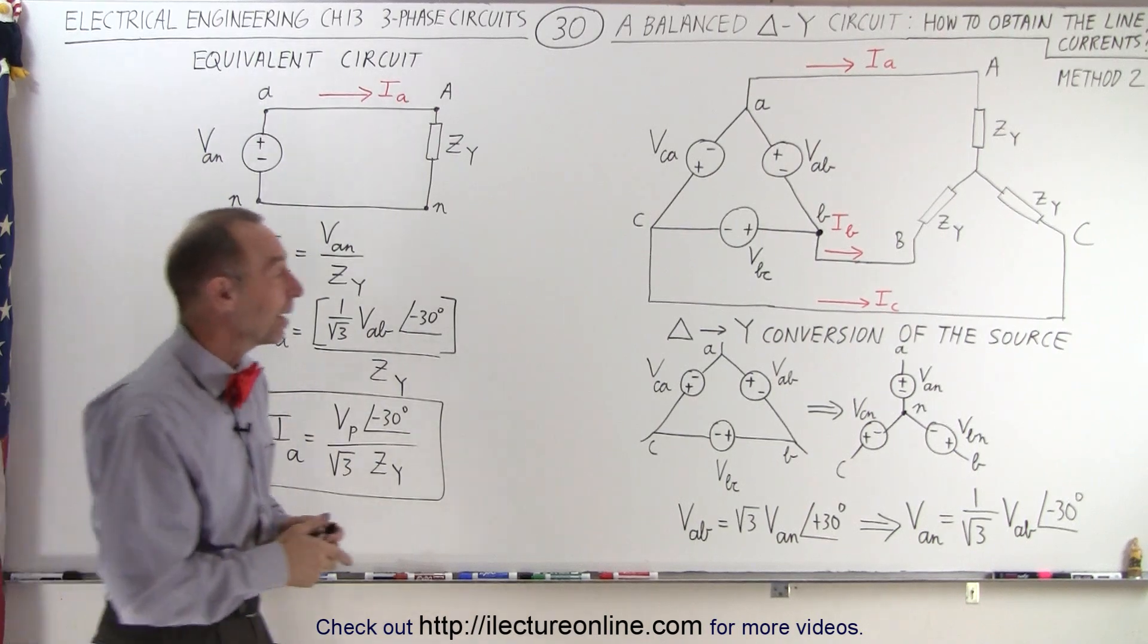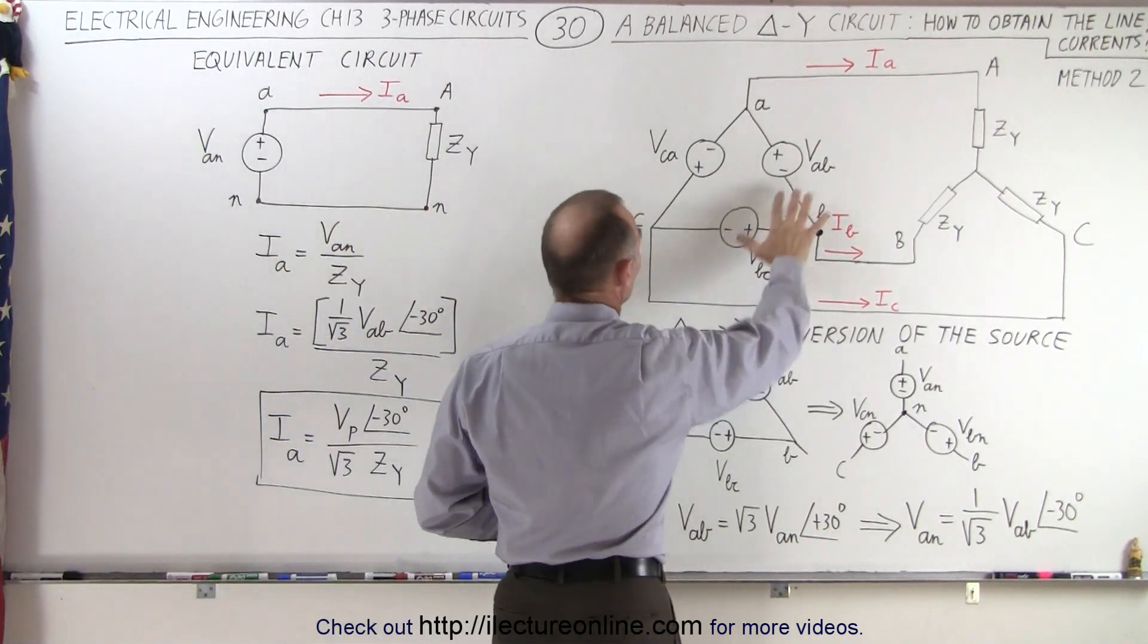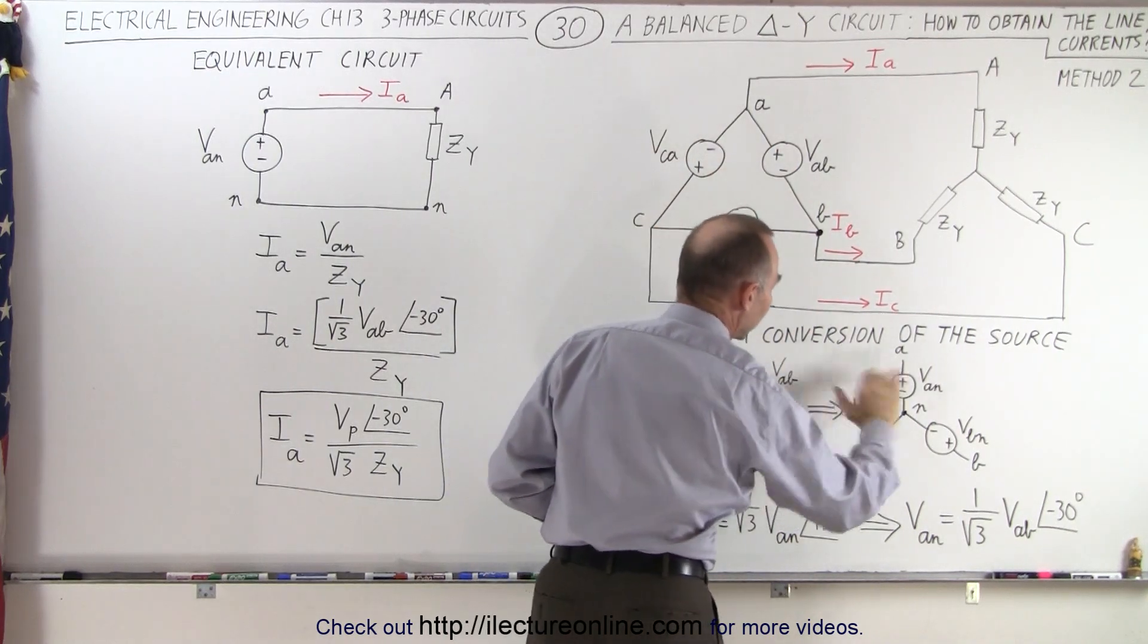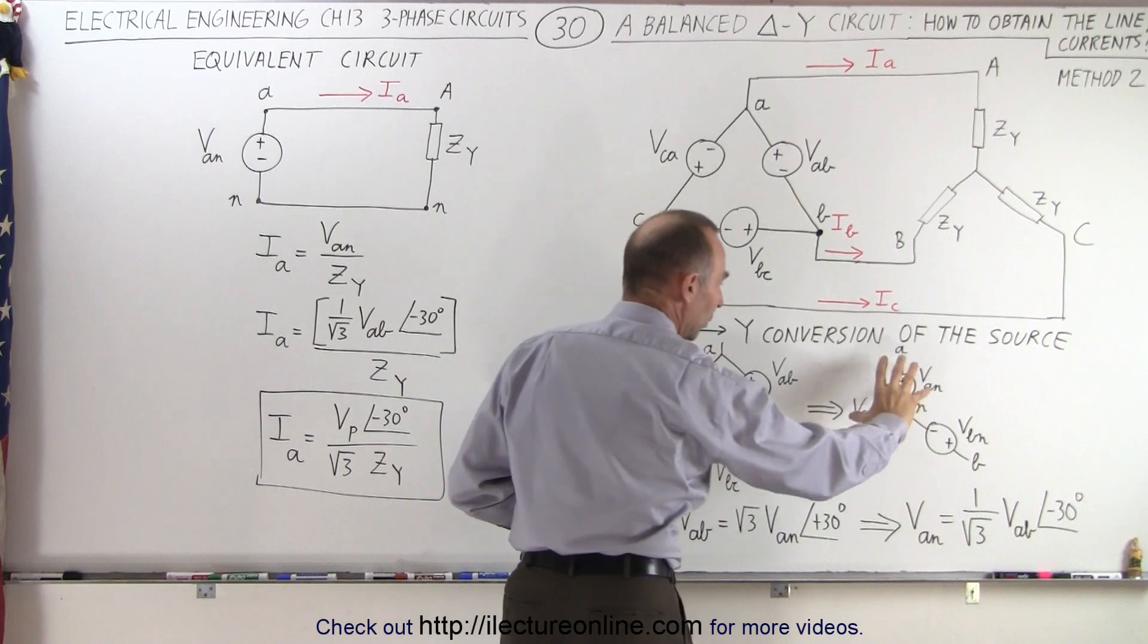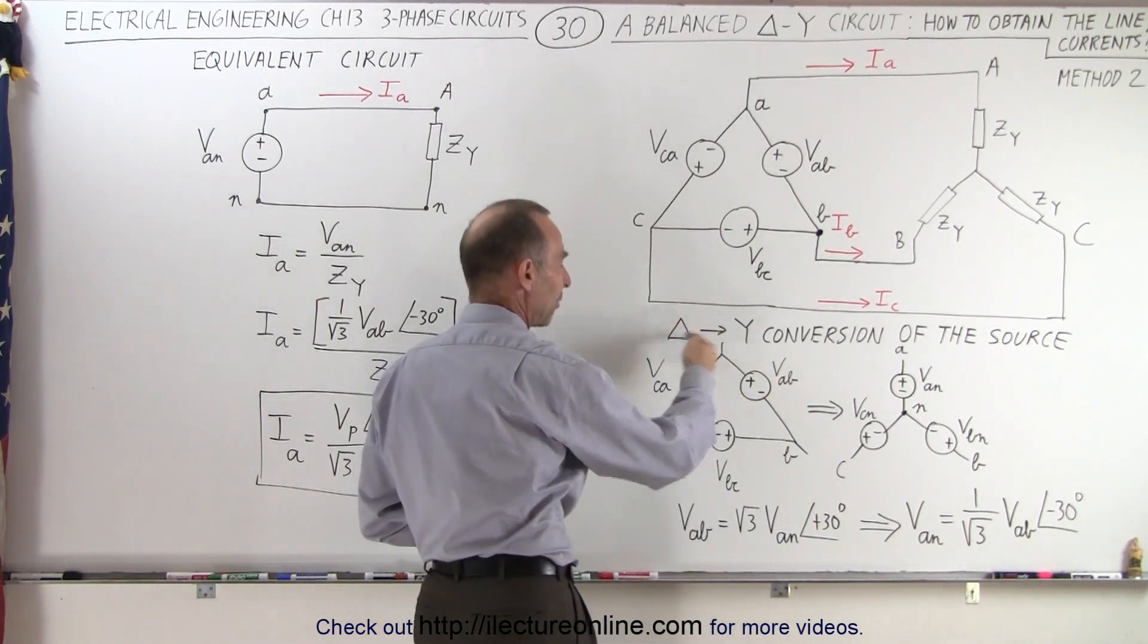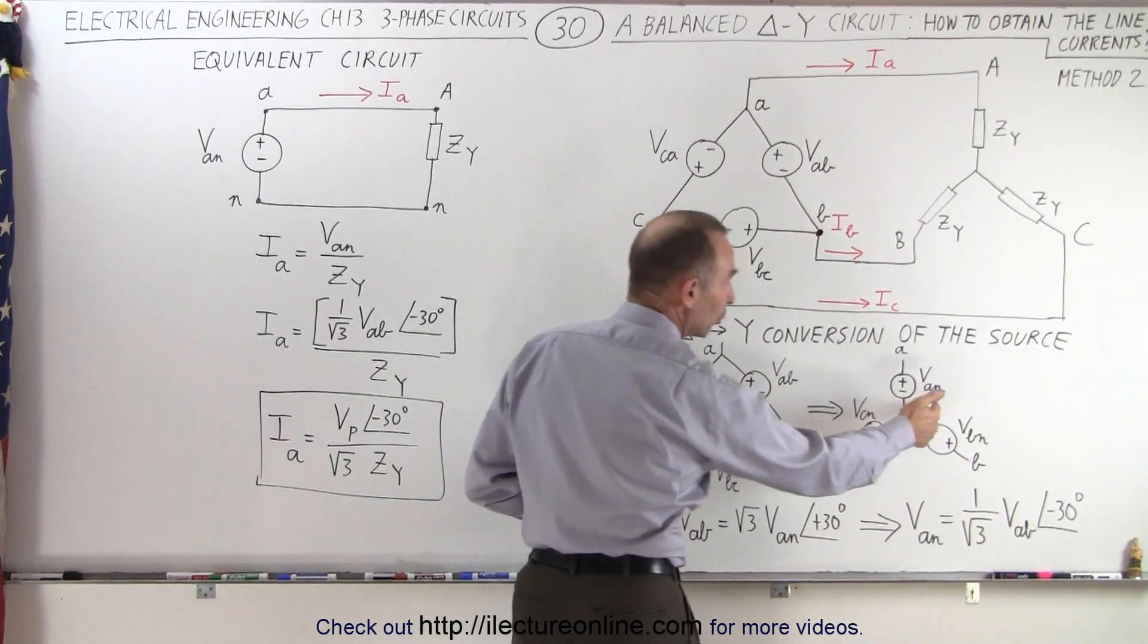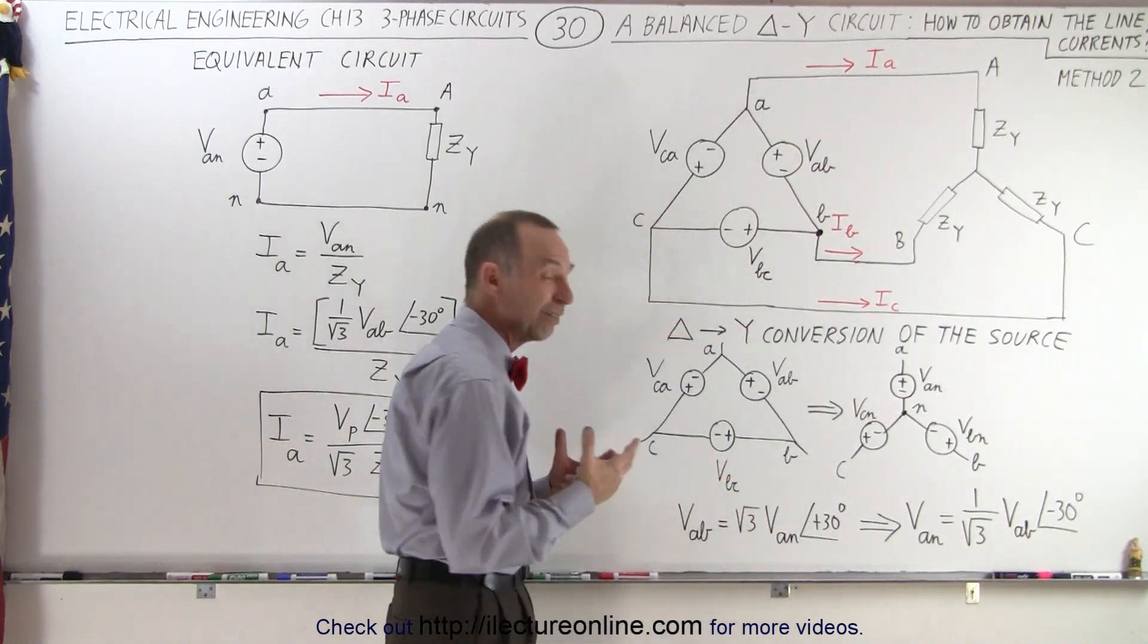So what we're going to do this time, we're going to take our source, which is in a delta formation, and do a delta to Y conversion. So instead of having this, we end up with this. Here we have what we would call the line voltages, and we're going to convert that to the phase voltages, the equivalent phase voltage.